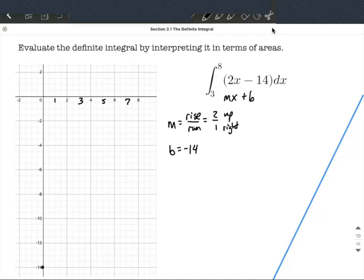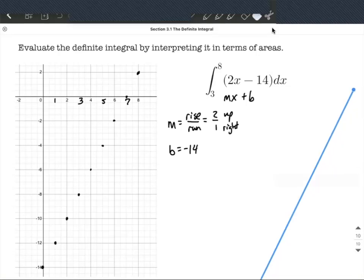So negative 14 to negative 12 and go right 1. Up 2, right 1. Up 2, right 1. Up 2, right 1. And just keep going and we can fill out and get a very nice graph going. After we have our graph, go ahead, got a few points, connect those points together.